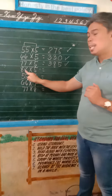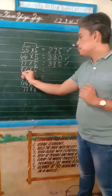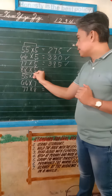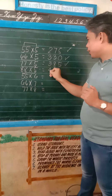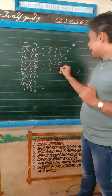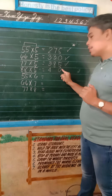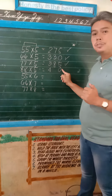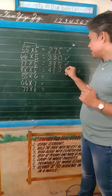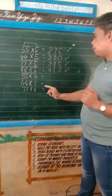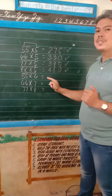88 times 5. 8 times 5 is equal to 40. Write 4 and write 0. 4 plus 0 is equal to 4. Write 4 between 4 and 0. So 440 is the product of 88 and 5.